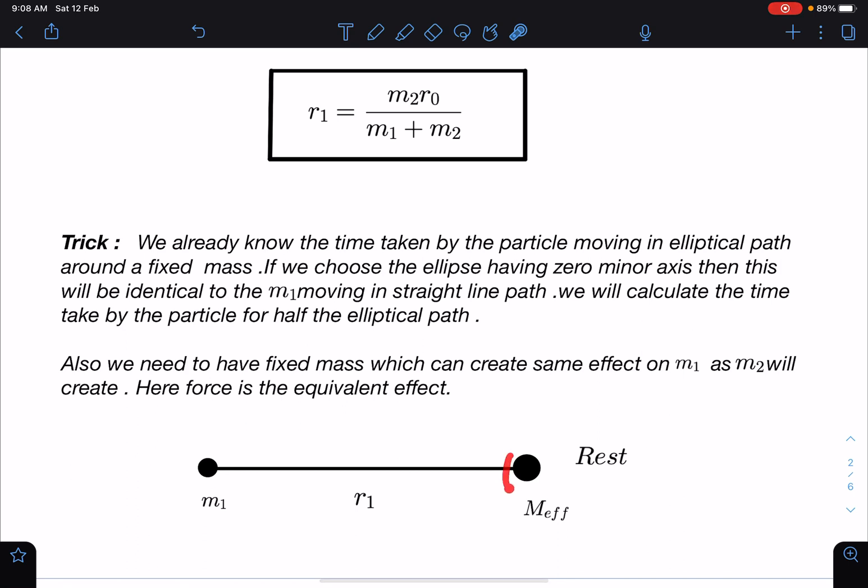Also we need to have a fixed mass which can create same effect on m1 as m2 will create. So I'm using here some mass and I don't know how much it will be, so I'm calling it as m effective. This is at rest and it has to follow an elliptical path. Here force is the equivalent effect. So the logic in this case I'm using is the boundary conditions.